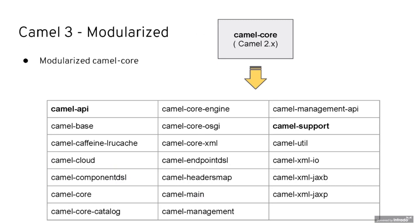Regarding the modularization of CAMEL core: in CAMEL 2, all the core stuff was inside a single JAR. To modularize this, we split the core classes and functionalities into multiple modules — in the end we have 34 modules. The key ones are CAMEL API, which contains the public API for developers, and CAMEL Support, which contains the building tools to build custom components in CAMEL. If you are a developer, you will likely use those most; the others are more internal.